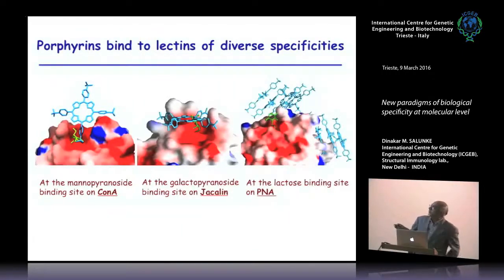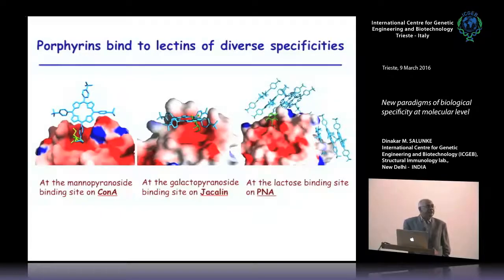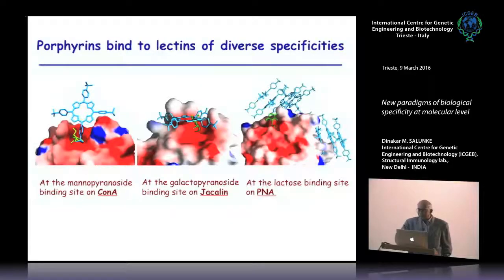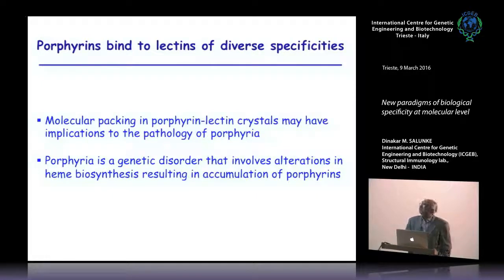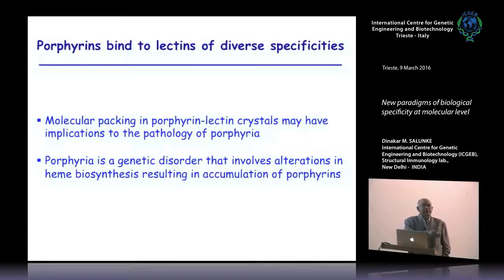We did further experiments: porphyrin binds in the sugar-binding site not only in concanavalin A but in two other lectins as well, though the interactions differed. This was our first indication that there are more than one ways in which ligand-receptor interaction can take place. An interesting side story: from the packing of molecules in crystals of porphyrin-lectin complexes, we saw insight into the molecular pathology of porphyria.